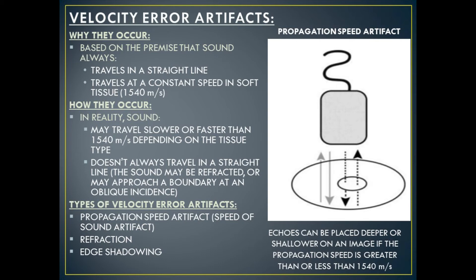Velocity error artifacts occur because ultrasound is based on the premise that sound always travels in a straight line and always travels at a constant speed in soft tissue — 1540 meters per second, the average propagation speed in soft tissue. In reality, however, sound can travel slower or faster than 1540 meters per second depending on the tissue type. Also, sound doesn't always travel in a straight line; it can be refracted or may approach a boundary at an oblique angle. Echoes can be placed deeper or shallower on an image if the propagation speed is greater than or less than 1540 meters per second. Types of velocity error artifacts include propagation speed artifact (also called speed of sound artifact), refraction, and edge shadowing.